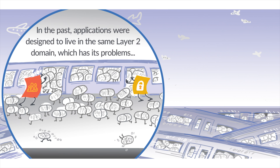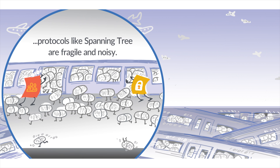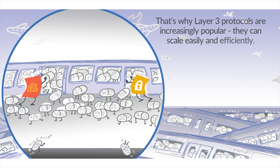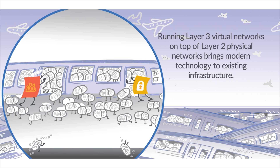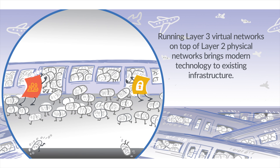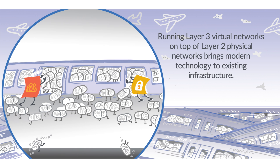In the past, applications were designed to live in the same Layer 2 domain, which has its problems. Protocols like Spanning Tree are fragile and noisy. That's why Layer 3 protocols are increasingly popular — they can scale easily and efficiently. Running Layer 3 virtual networks on top of Layer 2 physical networks brings modern technology to existing infrastructure.